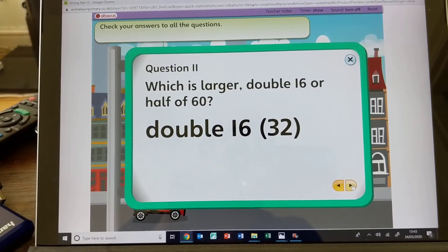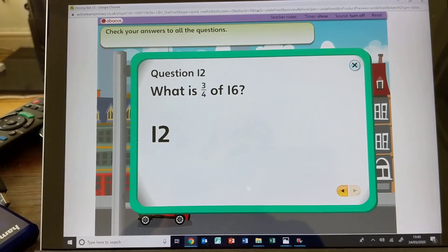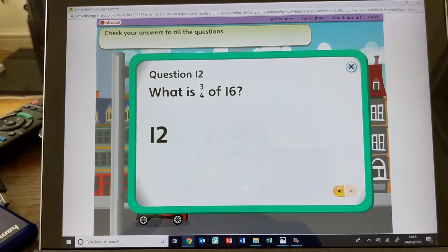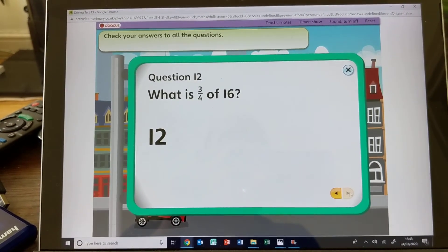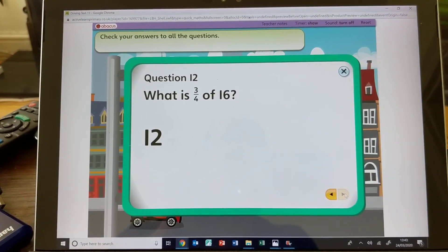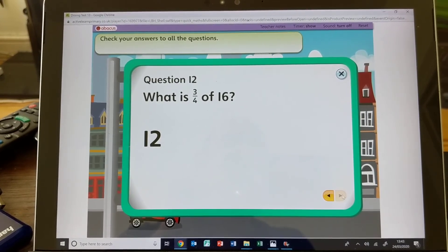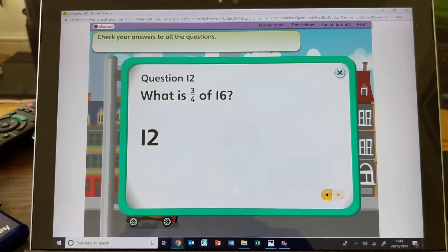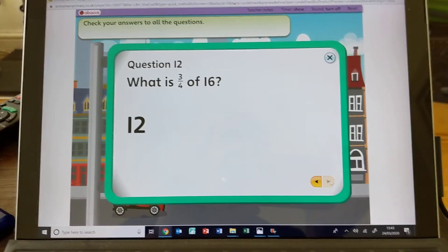Double 16 is larger. Half of 66 is 33. 3/4 of 16 is 12. 1/4 of 16 is 4 because four 4s are 16, so 1/4 is 4. So 3/4 would be 4 plus 4 plus 4, or 4 times 3, so that would be 12. Give yourself a mark out of 12. Well done, hopefully.